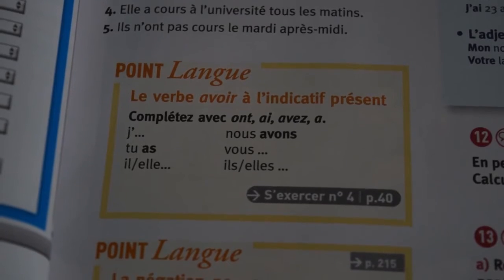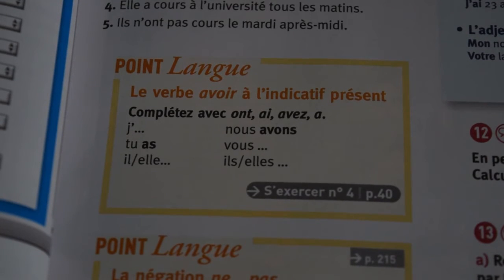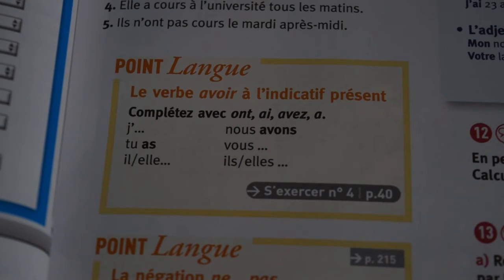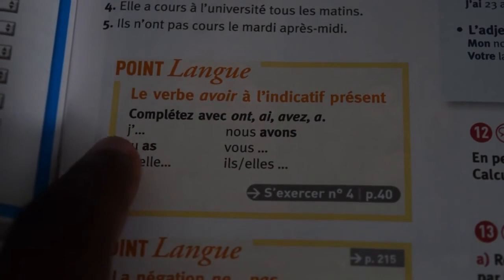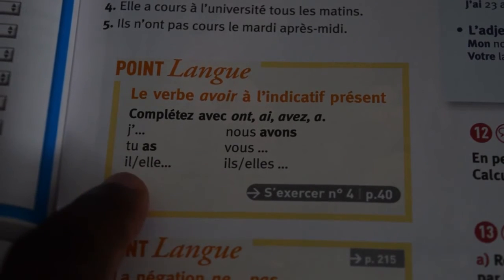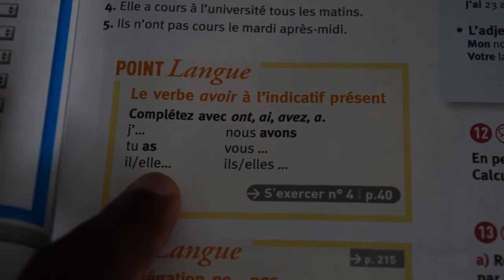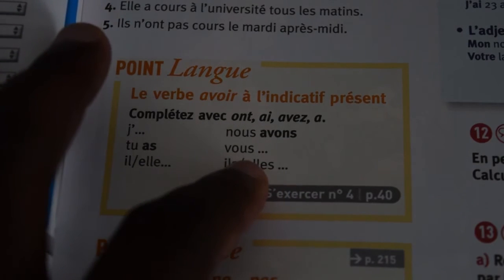Now let's look at the grammar section — Poilong. We are talking about 'le verbe avoir à l'indicatif présent.' The verb AVOIR in English means 'to have,' and we are conjugating it in the present tense. For example, 'I have' — you say 'j'ai.' The second person singular is 'tu as,' and then the third person singular is 'il' or 'elle.' In plural, we have 'nous avons.'